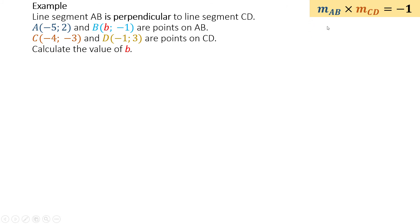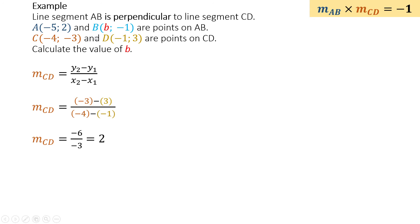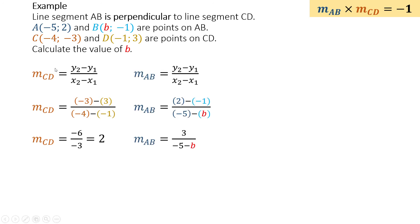So I'm working with perpendicular lines — I'm working with gradients. I'm going to start by working out the gradient of CD because there are no unknowns there. If I work out the gradient of CD I'm going to get 2. Then if I were to try and calculate the gradient of AB, I kind of can't because I've got an unknown.